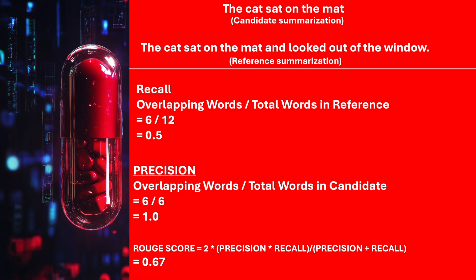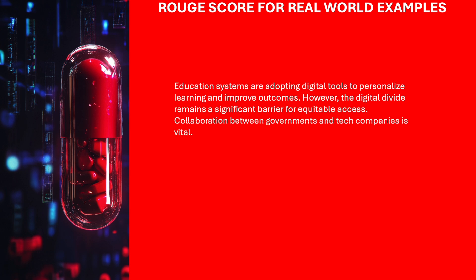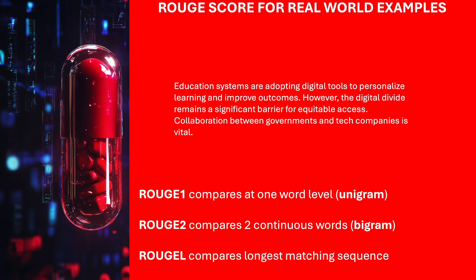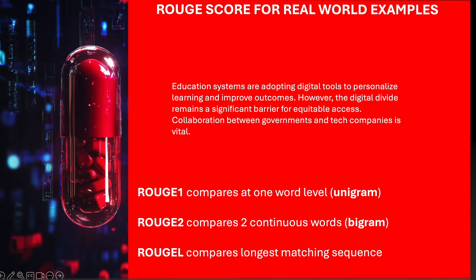A ROUGE score of zero means a bad summarization and a score of one means a perfect summarization. So a score of 0.67 would mean just above average. In reality the texts are more complex, and in such cases you need additional ROUGE scores. ROUGE-1 is what I have explained earlier, and it compares one word at a time — this is also called a unigram. ROUGE-2 takes two continuous words, also called a bigram. And ROUGE-L takes the length of the longest matching sequence in the calculation. So if you have a ROUGE score which is high at the unigram level, high at the bigram level, and also at the longest sequence level, it means that the summarization is very good.